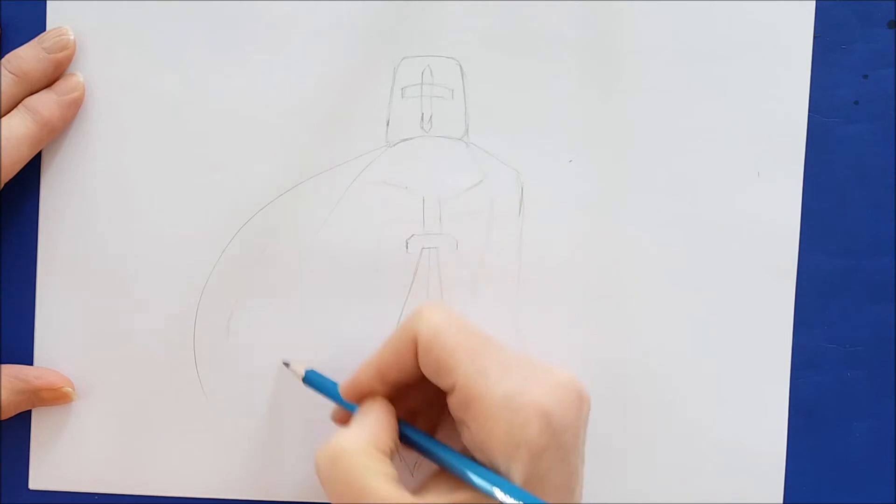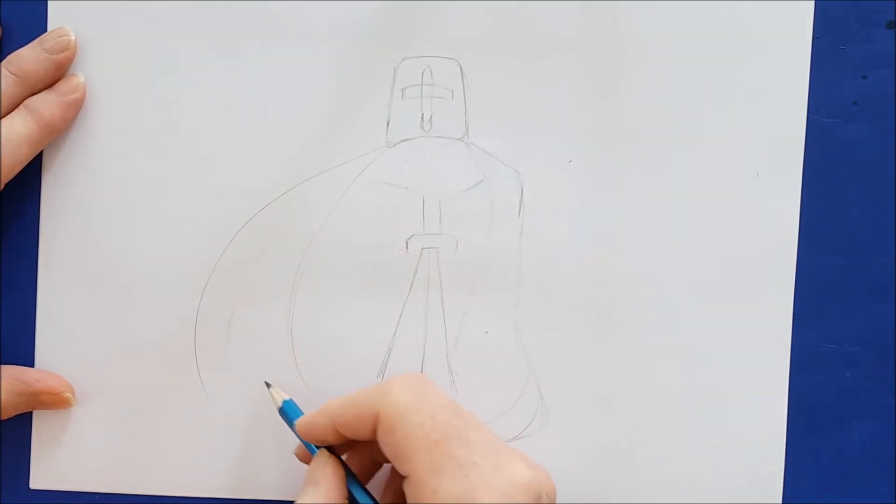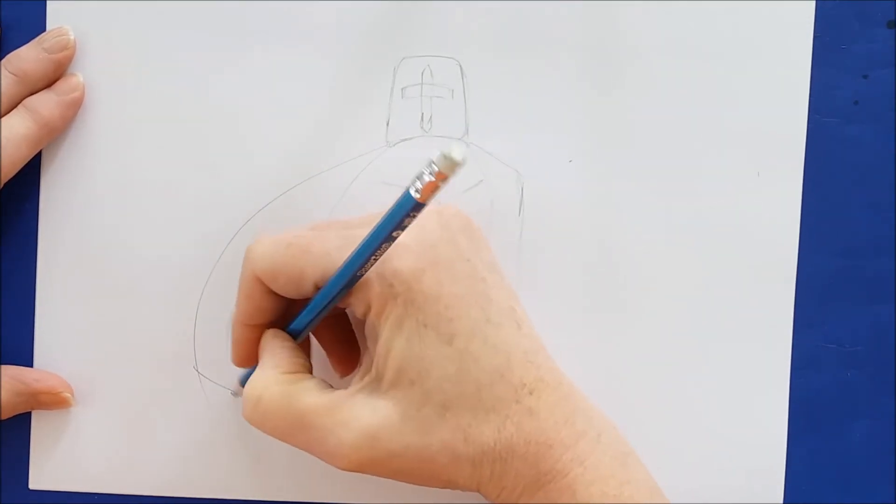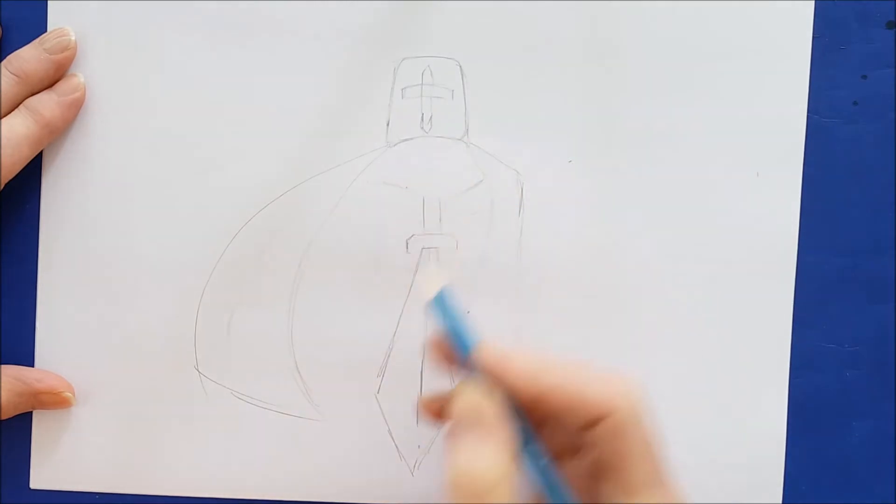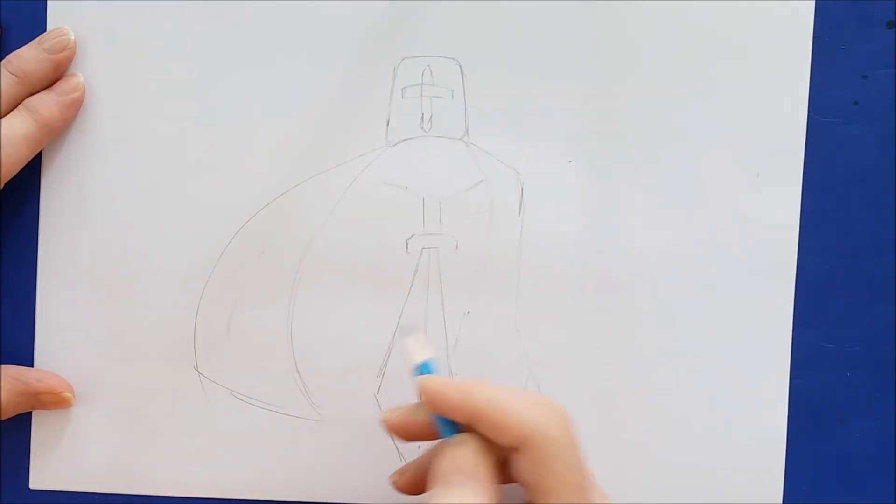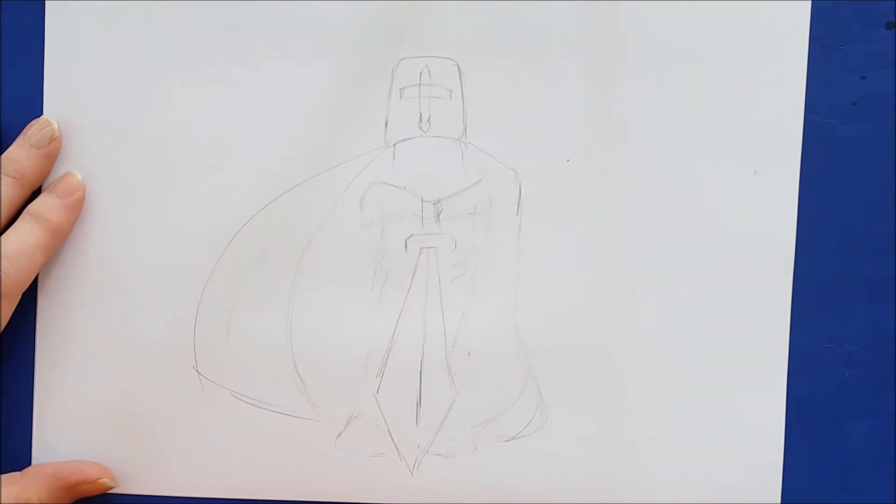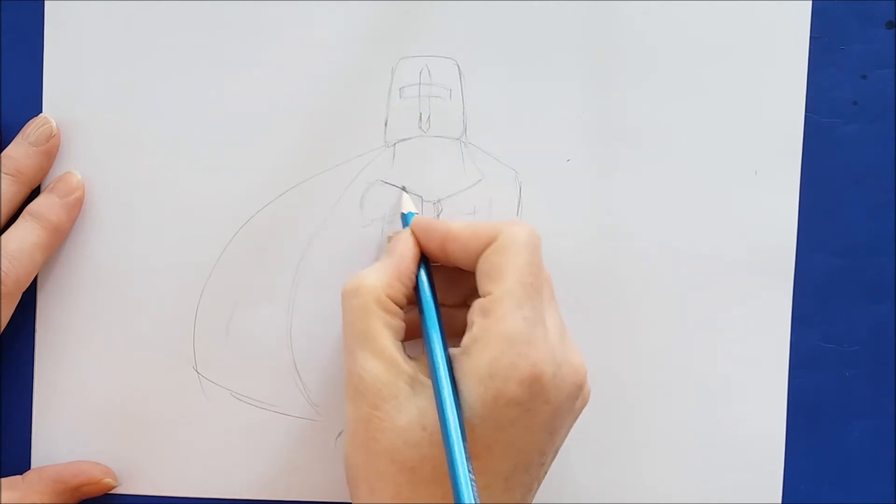I'm going to do the same thing on this side, but it's a big, wide curving, almost like a sailboat type of shape, like the sail on a sailboat. That's because the wind's blowing the cape outward.